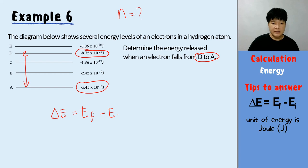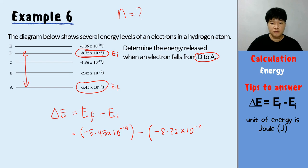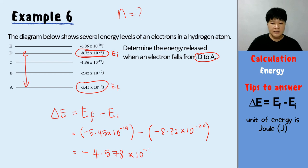The initial is D and the final is A, where you drop to. Delta E equals E final of negative 5.45 times 10 to the power of negative 19, minus E initial of negative 8.72 times 10 to the power of negative 20 joules. Pressing the calculator correctly gives a negative value: negative 4.578 times 10 to the power of negative 19 joules. Energy is released, so delta E must be negative, and the final answer must be in joules.